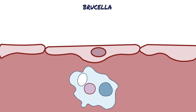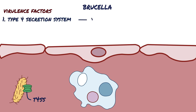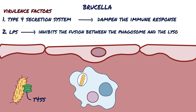However, Brucella has a few virulence factors that it uses to avoid destruction. First, it has the ability to escape immune recognition by using the type 4 secretion system, which is a collection of proteins that can dampen the immune response. However, some organisms are not able to escape and are caught by macrophages and ingested. Inside the macrophage, Brucella uses another virulence factor on its outer membrane called non-endotoxic lipopolysaccharide, or LPS for short. LPS inhibits the fusion between the phagosome and the lysosome and allows Brucella to avoid intracellular death.